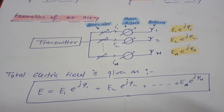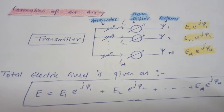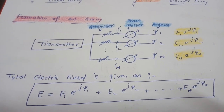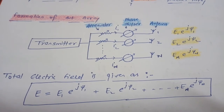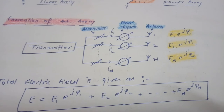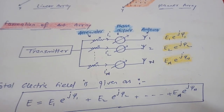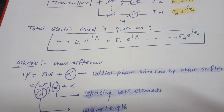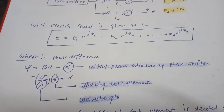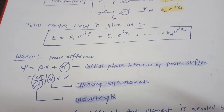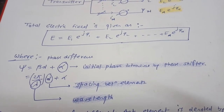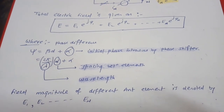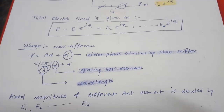The total field strength E is given as the algebraic sum of all individual element fields: E = E₁·e^(jψ₁) + E₂·e^(jψ₂) + ... + Eₙ·e^(jψₙ). The phase difference ψ is given as ψ = βd + α, where α is the initial phase introduced by the phase shifter, β = 2π/λ, d is the spacing between elements, and λ is the wavelength. The field magnitudes of different antenna elements are denoted by E₁, E₂, ..., Eₙ.